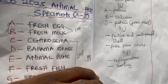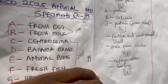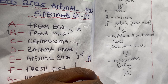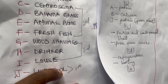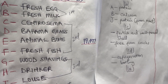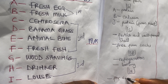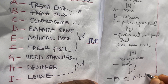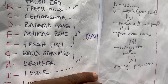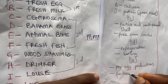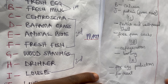They can also ask you to state two or three reasons for keeping specimen J (live fowl) in a poultry farm. The reasons include: for egg production, and for meat production — for example, broilers are kept specifically for meat production.